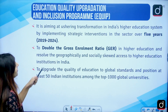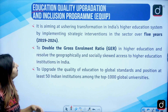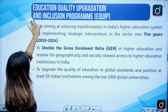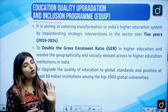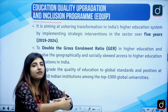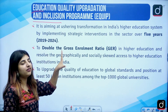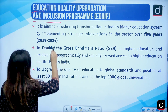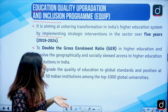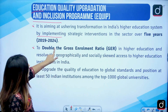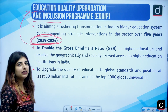Next we have EQUIP — Education Quality Upgradation and Inclusion Program. It aims at assuring transformation in India's higher education system by implementing strategic interventions where improvement is required in the teaching sector over a 5-year cycle. It aims to double the Gross Enrollment Ratio (GER) in higher education and resolve geographically and socially skewed access to higher education institutions in India.